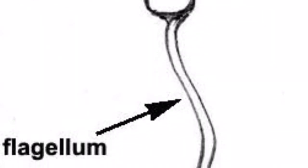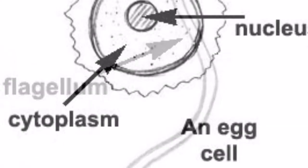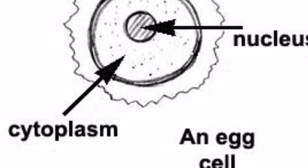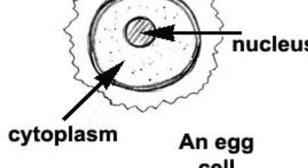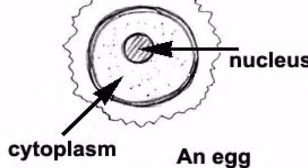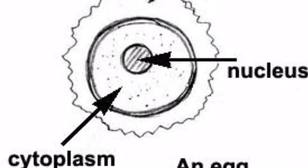With sexual reproduction there are advantages as well as disadvantages. Sexual reproduction increases genetic variation, which improves survival chances.